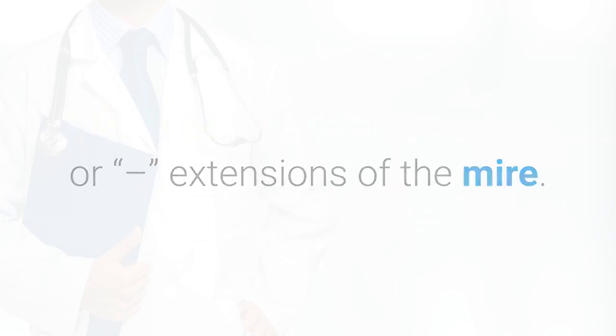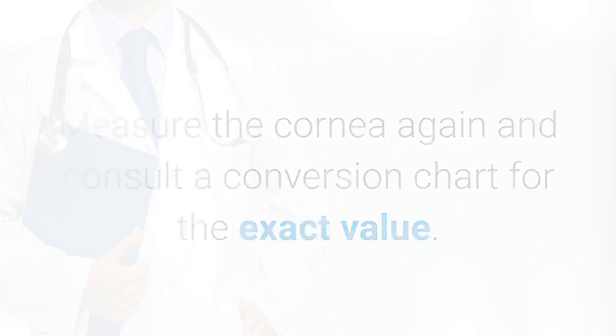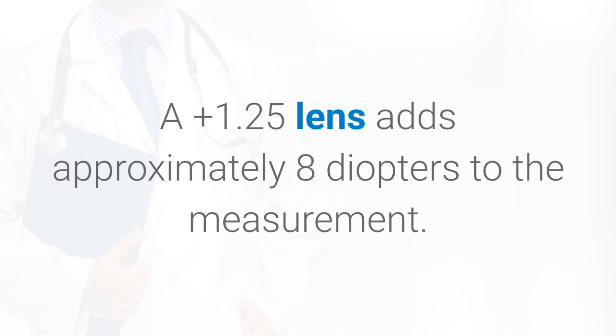Measure the cornea again and consult a conversion chart for the exact value. A plus 1.25 lens adds approximately 8 diopters to the measurement. A minus 1.00 lens subtracts about 8 diopters.